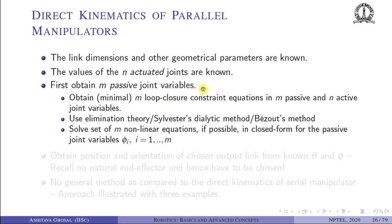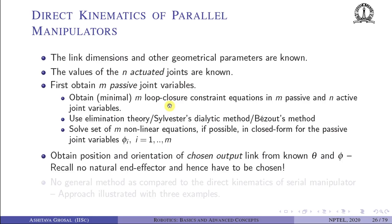The first task is to solve for the m passive joint variables given the n actuated joint variables. We need to first obtain a minimal number of m loop closure constraint equations in m passive variables and n active joint variables — m should be as small as possible to simplify the process. Then we use elimination equation theory — for example, Sylvester's dialytic method or the Bézout method — to eliminate m minus 1 passive joint variables and obtain a single equation in one passive joint variable.